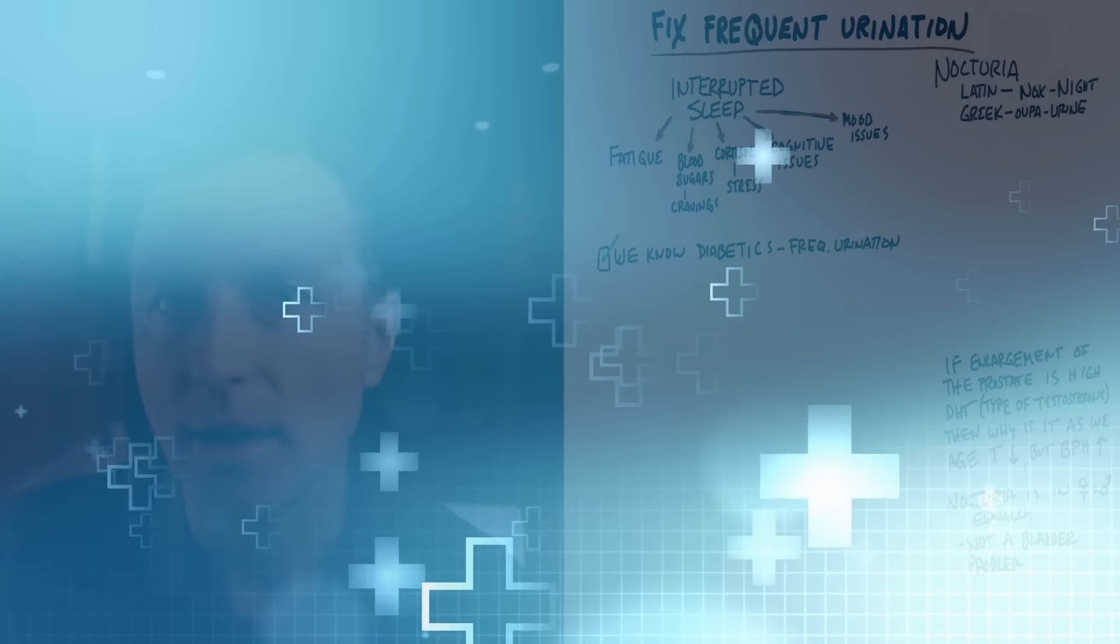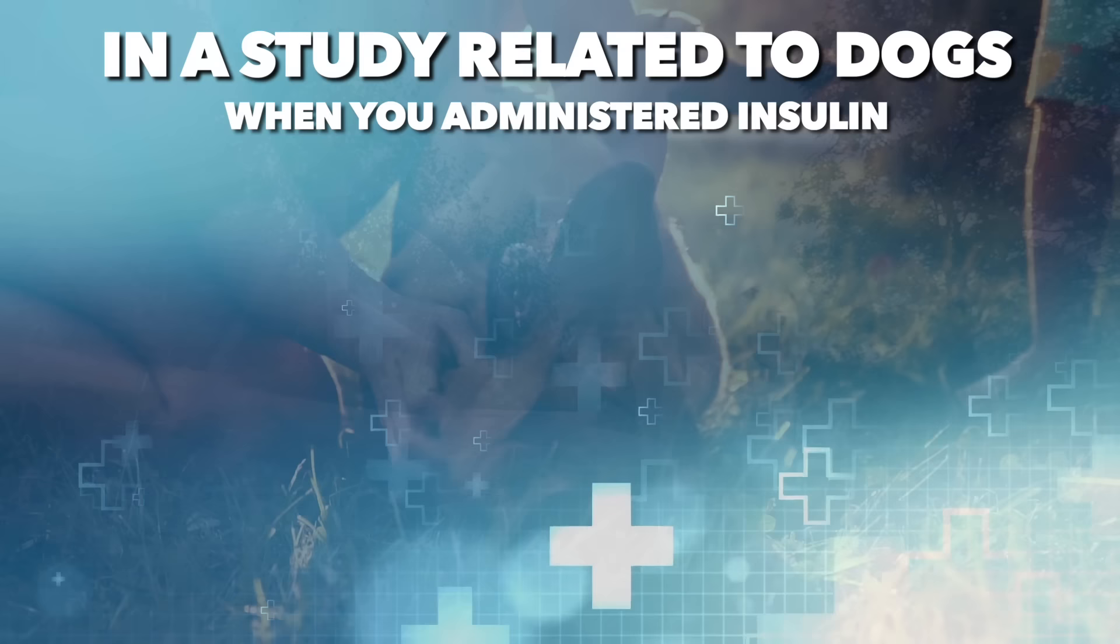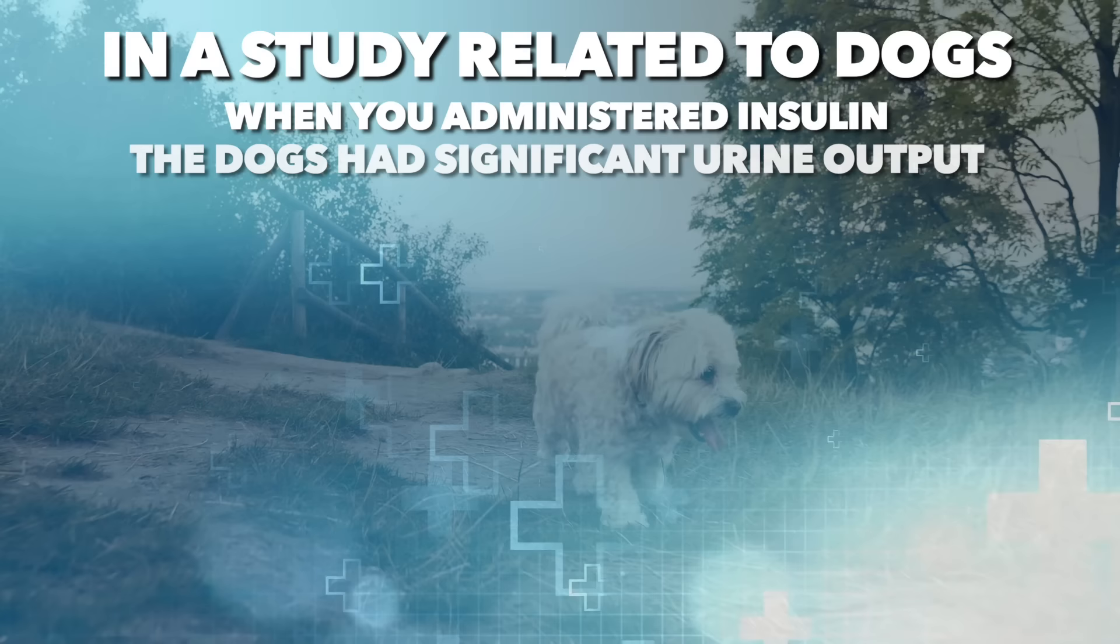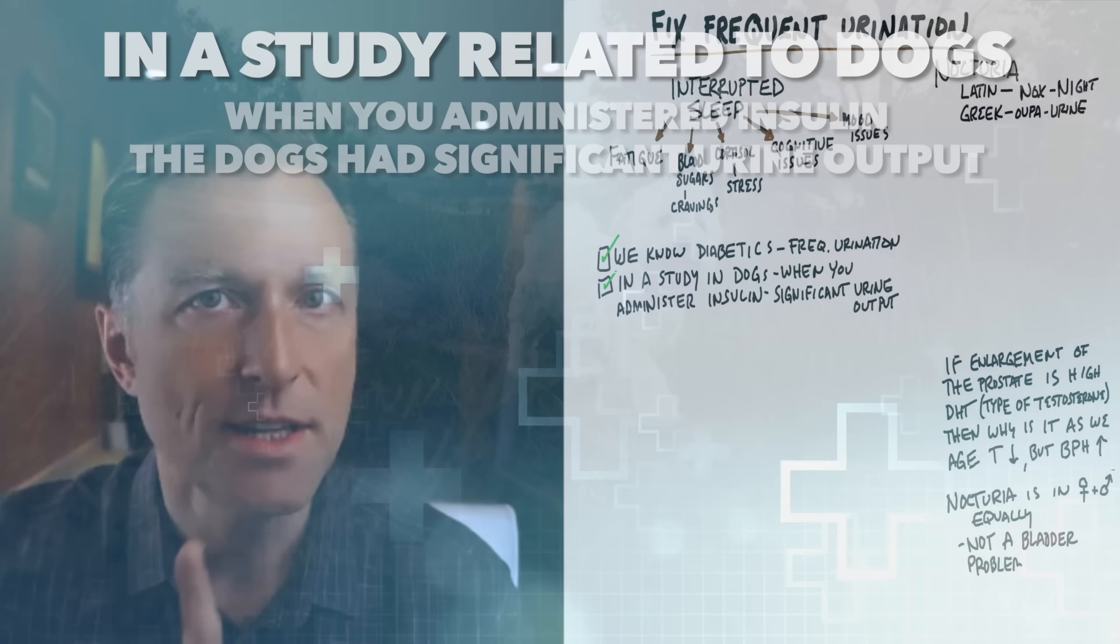In a study related to dogs, and I'm going to put these studies down below, it was found that when you administer insulin to these dogs, you have a significant output of urine. These dogs start dumping lots of urine. Here's another clue.